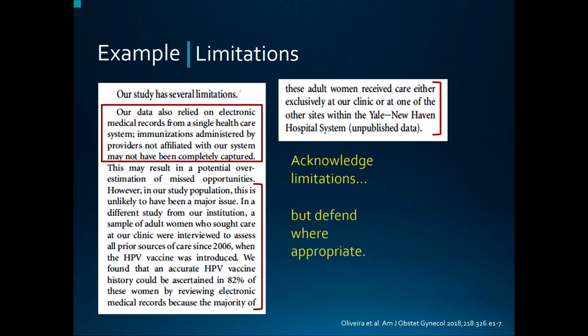Something else to appreciate in a good limitations example is how specific the authors are about the potential implication of their limitation. For example, one paper states that because they used electronic medical records, it may have led to an overestimation of missed opportunities. This specificity builds the argument that the authors are credible and knowledgeable about the specific impact this measurement is likely to have on their results.